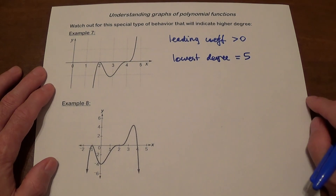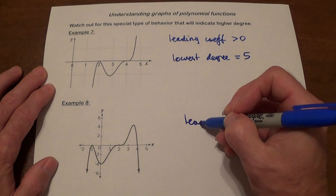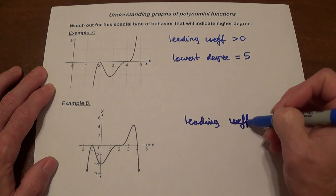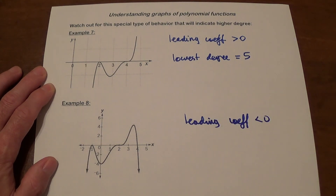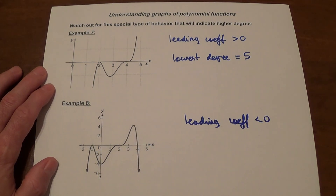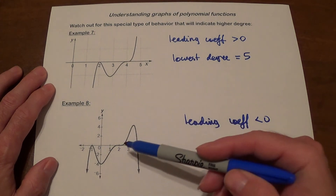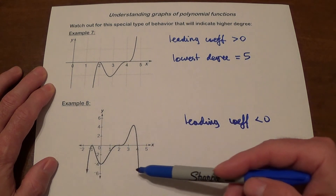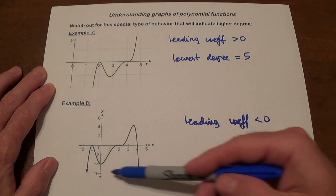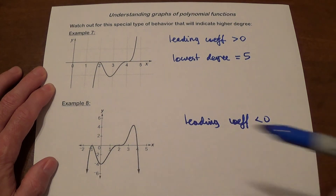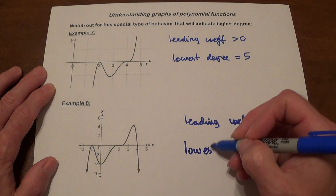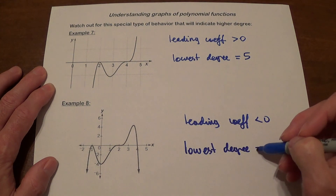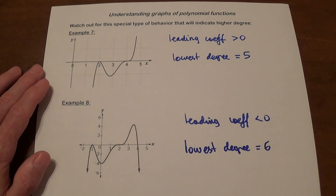Let's take a look at this last graph. The leading coefficient is negative because the right side goes down. For the lowest degree, we count the turning points: 1, 2, 3. With 3 turning points you would think the degree is 4, but we have the same type of special flat behavior here. We know the degree must be even because both ends go in the same direction, but degree 4 won't work here. That means the lowest degree is 6. And that's how these types of problems are done.